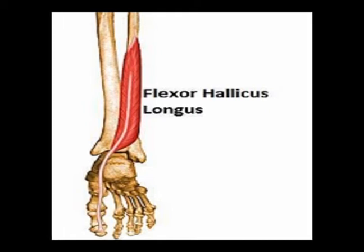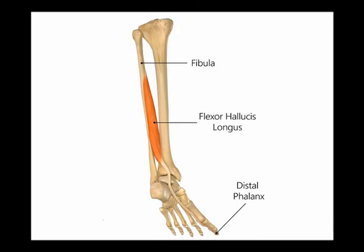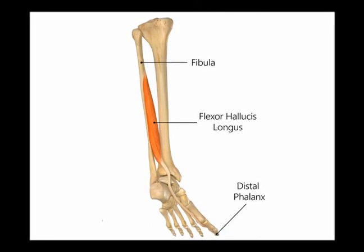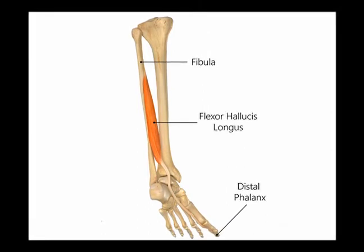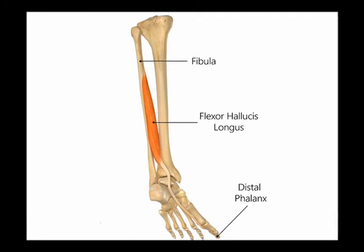The flexor hallucis longus muscle originates on the posterior aspect of the fibula and it inserts onto the plantar aspect of the distal phalange of the great toe. Its concentric action is great toe flexion. It is innervated by the tibial nerve from vertebral levels S2 and S3.